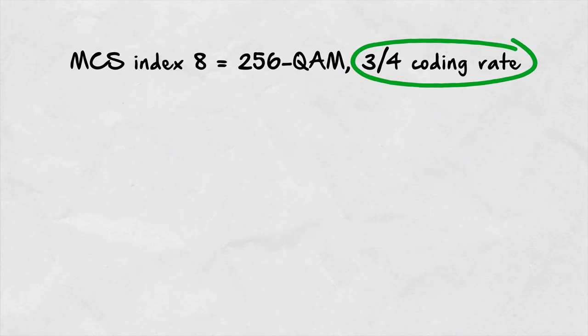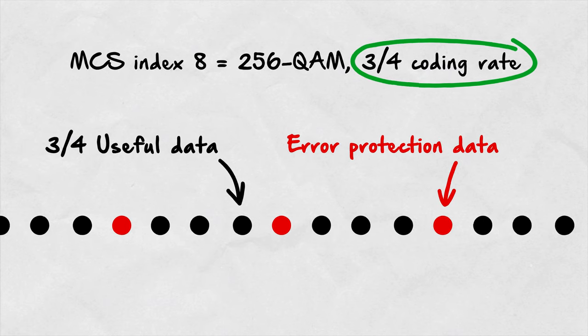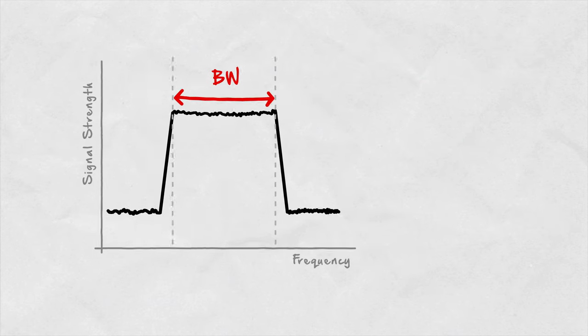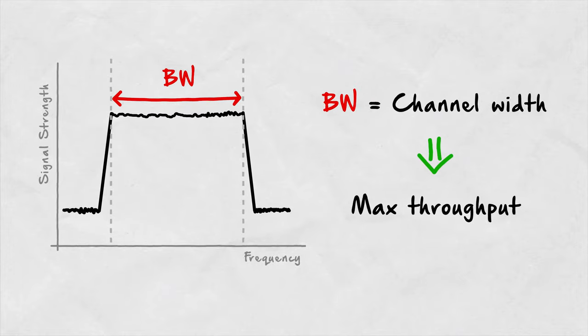The fractional number next to the modulation type tells us the part of the data throughput that's useful data. For three-fourths, three out of the four bits are useful data and the fourth is error protection related data. Channel size is given in megahertz and tells us the width of the spectrum the signal takes. The larger the channel size, the higher the throughput.